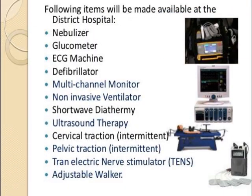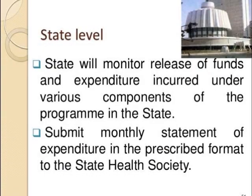At the district hospital, along with other equipment, there should be an ECG machine, defibrillator, ultrasound, cervical traction, pelvic traction, and adjustable board. At the state level, the main function is to provide funds and oversee expenditure incurred under the various components of the program.